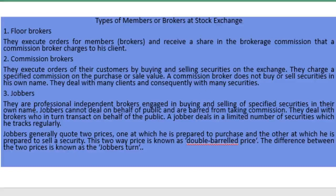The third type is the jobber. Jobbers are professional independent brokers engaged in buying and selling of specified securities in their own name. Unlike commission brokers, jobbers can buy and sell specified securities in their own name. Jobbers cannot deal on behalf of the public; apart from taking commissions, they deal with brokers who in turn transact on behalf of the public.